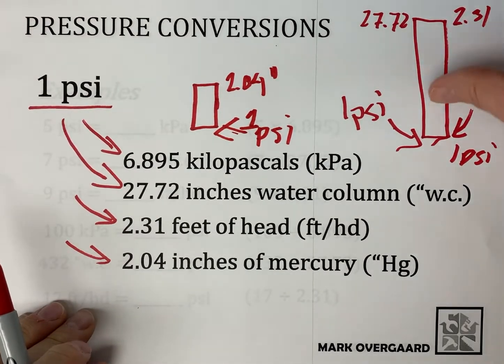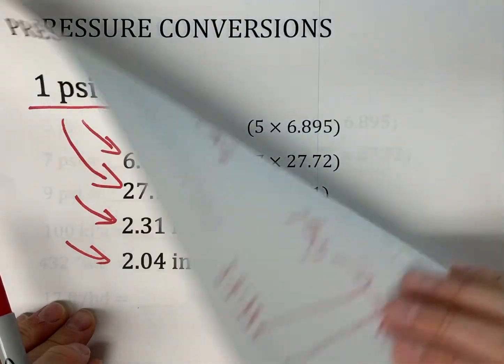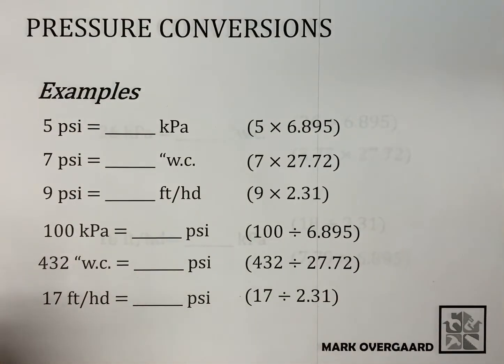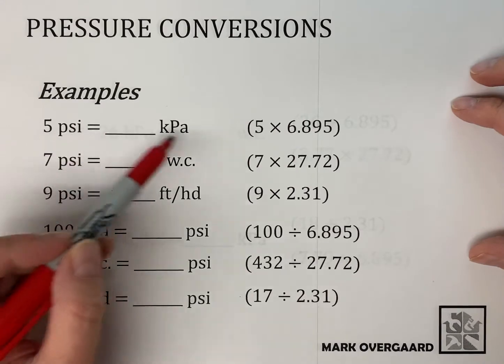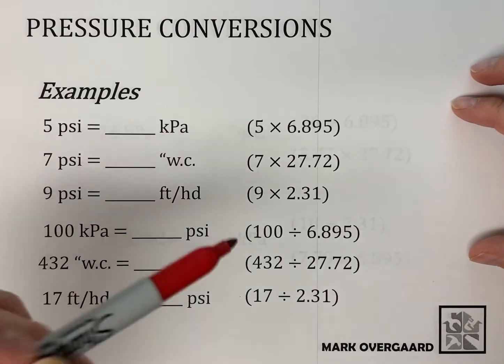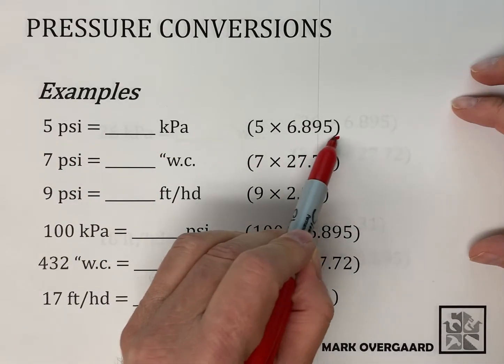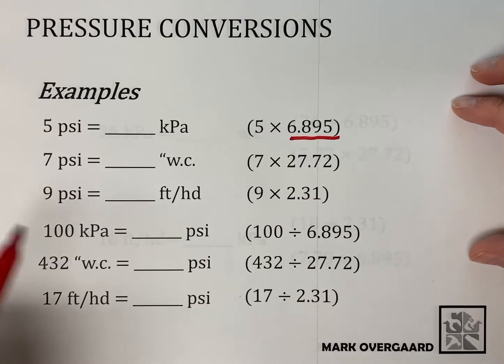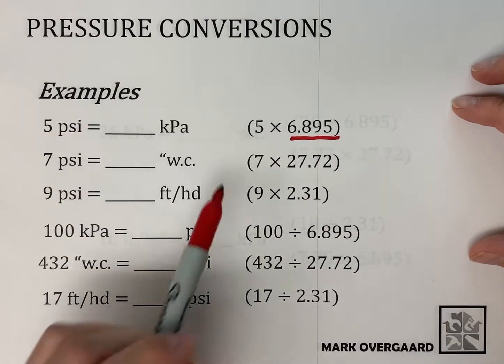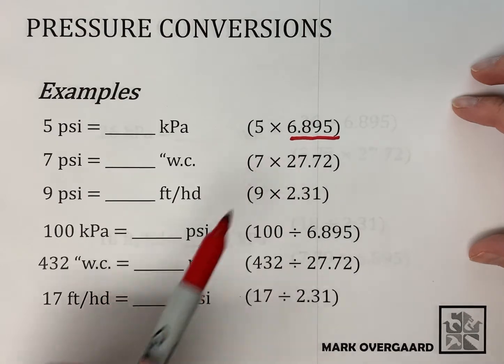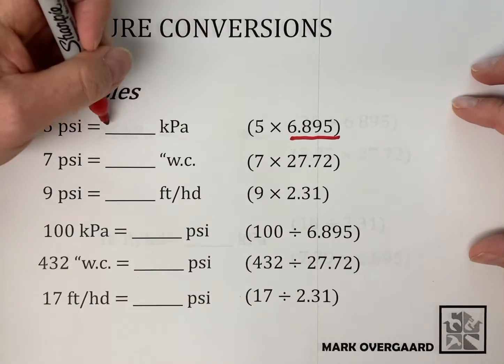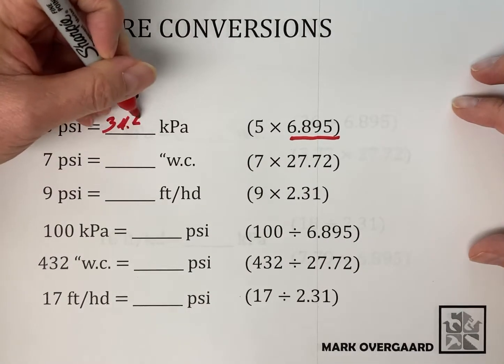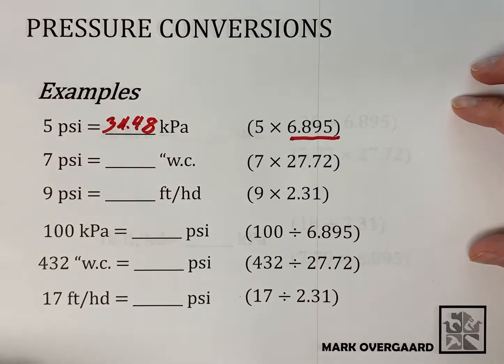So the couple things we want to do here, we want to be able to do some translations from one to the other. Okay, so here's some examples. So the idea is you got 5 PSI and how many kPa? Well, what we need to remember is the translation number, how they work. One PSI is 6.895 kPa. So if we take the 5 PSI, multiply it, we're going to get a grand total of 34.48 kPa.